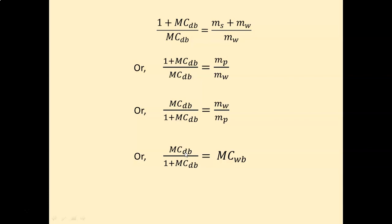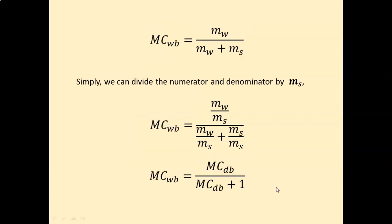That was a lengthy process, so we can also do it by a simpler method — dividing the numerator and denominator by the mass of solid to get the same result. The previous method is beneficial if an exam question asks you to derive the relationship between moisture content on wet basis and dry basis and carries more than one mark, so you can use that method to gain full marks.